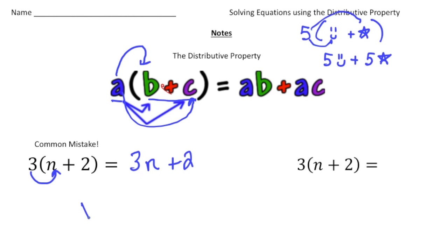This is wrong. Please write down wrong here. What you have to remember is we have three groups of everything inside here. So three times n does give you the three n. But then three times two gives you six. So that would be three n plus six.